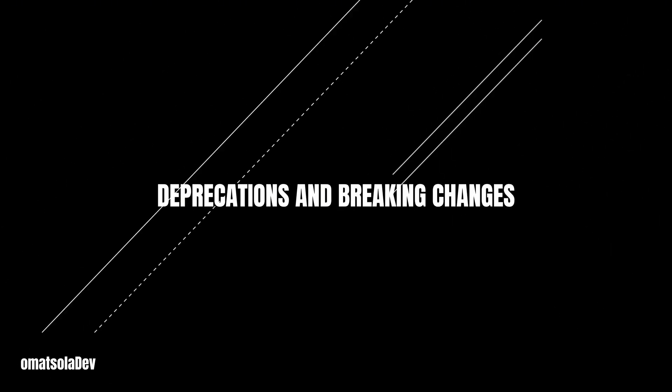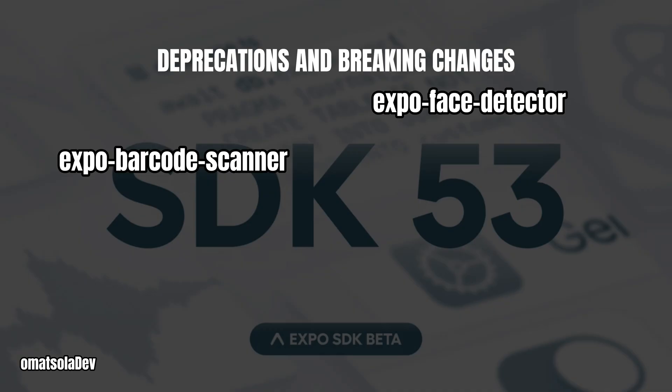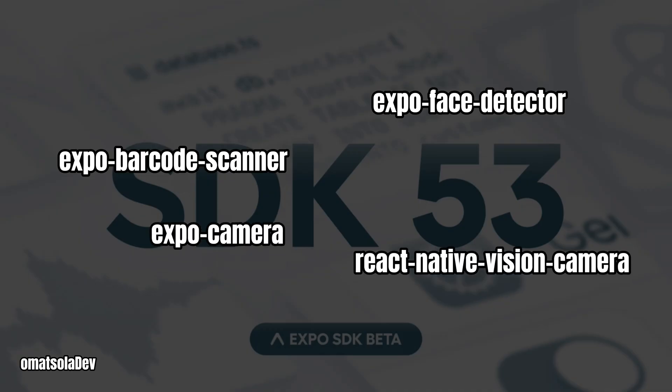SDK 53 also brings some deprecations and breaking changes. Some modules are being phased out — for example, Expo Barcode Scanner and Expo Face Detector are deprecated, and it is recommended to use Expo Camera and React Native Vision Camera instead. The Expo SQLite module has been updated to a more modern API; if you are using the older version, you will need to adjust your code to align to the new structure.